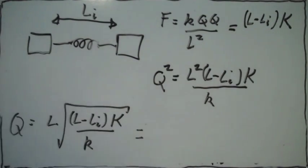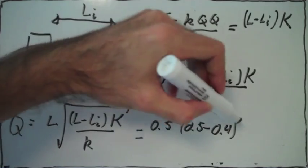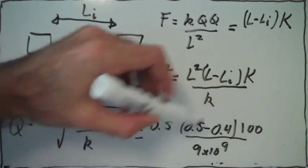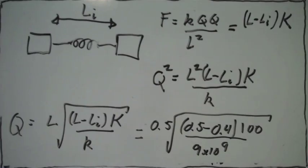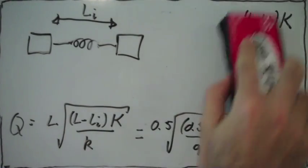Now we plug in numbers for these variables. We know the length of the string when it's stretched and when it was not stretched, and we know the constant of the spring and the constant k. We get this expression.